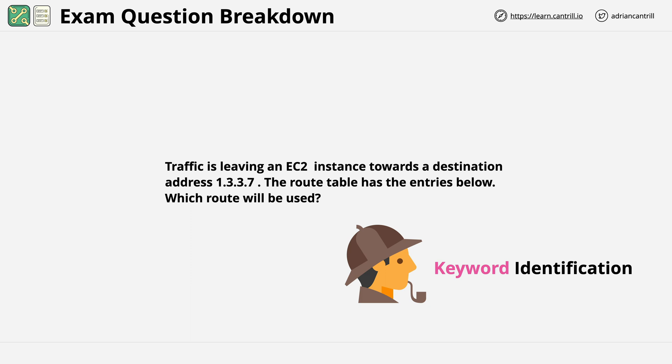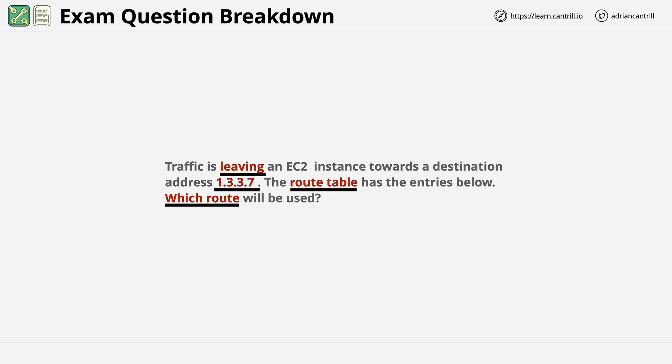Okay, so at this point, I hope you've had an attempt at identifying any keywords in this question. So let's step through and compare what we found. What I found is this. We see that traffic is leaving an EC2 instance. When answering networking questions which involve any form of traffic flow, pay attention to the direction because it's nearly always important. Sometimes it can affect cost. Remember, data is free when inbound to AWS but carries a cost in an outbound direction. Sometimes the direction can affect security or routing.